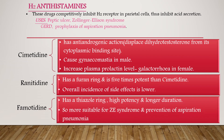They are also used for treatment of aspiration pneumonia. Adverse effects of cimetidine: it has an anti-androgenic action — it displaces dihydrotestosterone from its cytoplasmic binding site, causing gynecomastia in males (development of breast tissue) and increased plasma prolactin level or galactorrhea in females (nipple discharge). Ranitidine has a furan ring and is five times more potent than cimetidine, with a lower incidence of side effects. Famotidine has a thiazole ring, is highly potent, and has a longer duration, making it more suitable for Zollinger-Ellison syndrome and aspiration pneumonia.